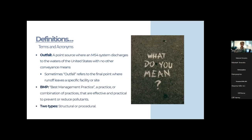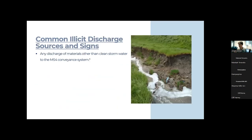BMPs — Best Management Practices — are practices or combinations of practices that are effective and practical to prevent or reduce pollutants, and are proven to reduce pollutants over repeated use. There are two types: structural (physical) and procedural. These definitions ensure we're all on the same page as we go into this class.